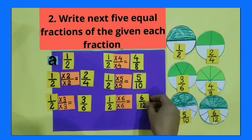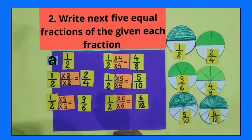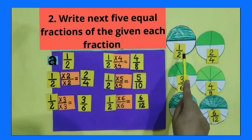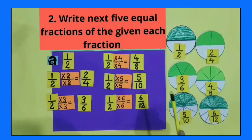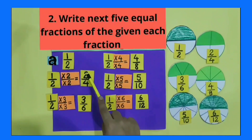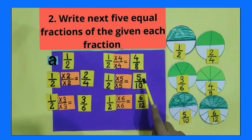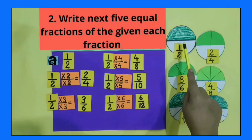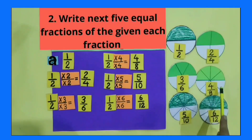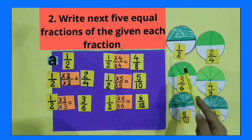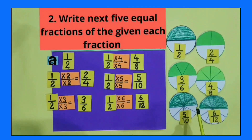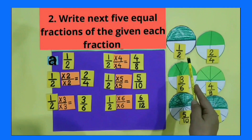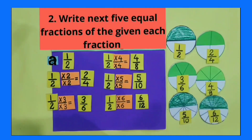All these are equivalent fractions of 1 by 2. The first fraction is 2 by 4, second is 3 by 6, third is 4 by 8, fourth is 5 by 10, and fifth is 6 by 12. You saw that I multiply the numerator and denominator with the same number to get equivalent fractions.